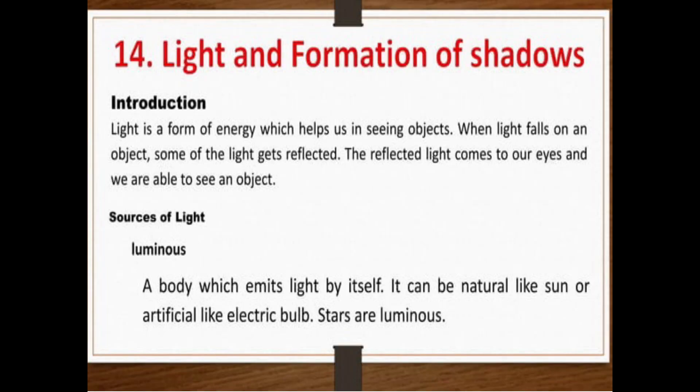Light and formation of shadows. In this chapter we are going to study what is light and how shadows are formed. Light is a form of energy which helps in seeing objects. When light falls on an object, some of the light gets reflected. The reflected light comes to our eyes and we are able to see an object.